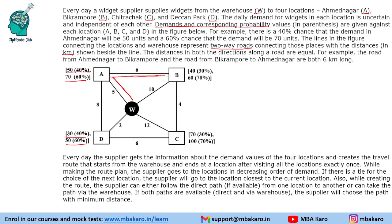Every day the supplier gets information about demand values at the four locations and creates a travel route that starts from the warehouse and ends at a location. This paragraph is very important — all points must be followed while creating the route plan. The first rule is: start from the warehouse and end at a location only, not other places. After visiting all the locations exactly once — so you must go to each location exactly once.